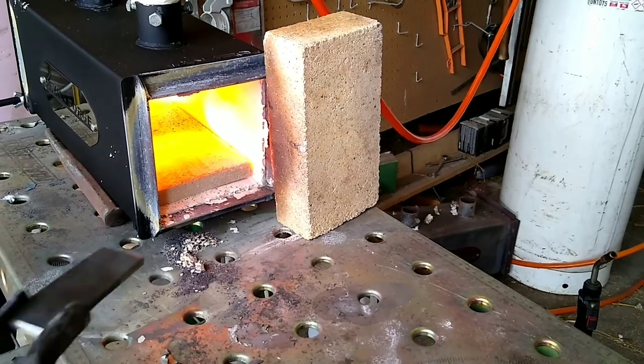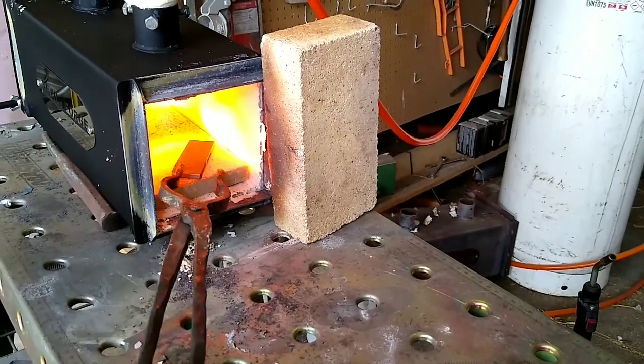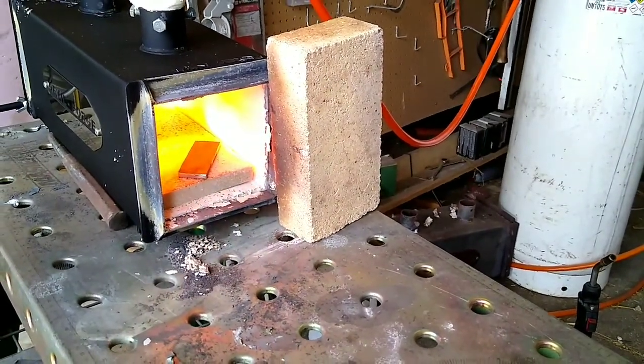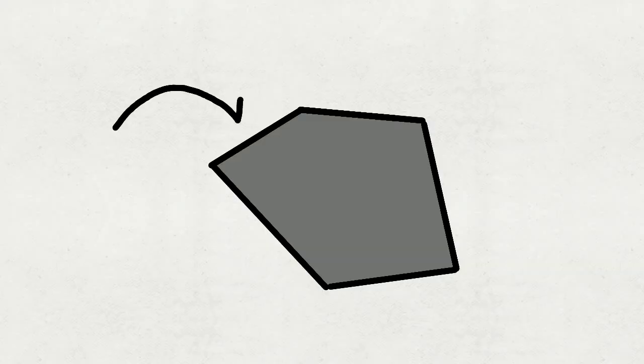When a piece of steel is heated to critical heat, new crystals begin to form and replace the old ones. These are called austenite.